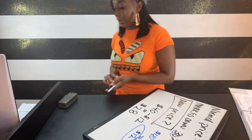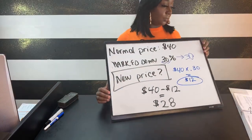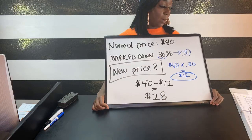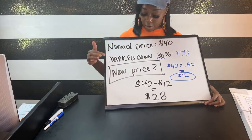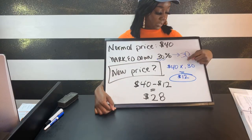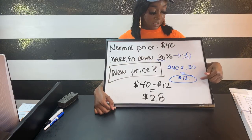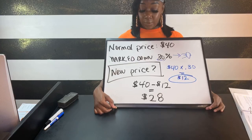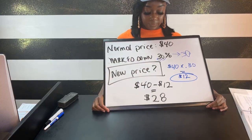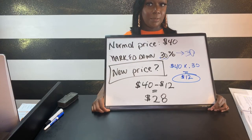One more time through the problem: the normal price of denim jeans at House of Jyl is $40, but the price has been marked down 30%. What's the new selling price? We convert to a decimal — 0.3 — multiply by our original value to get $12 (the discount amount), then subtract from $40 to get $28. Percent markdown is just like calculating a discount — how much are you actually going to pay?